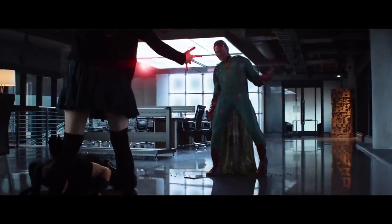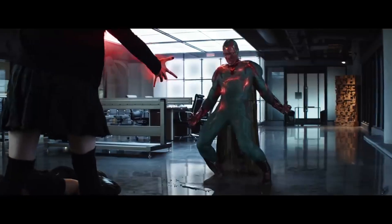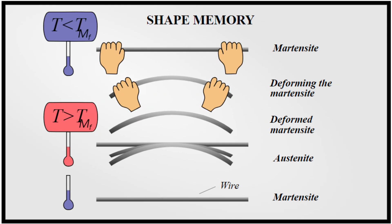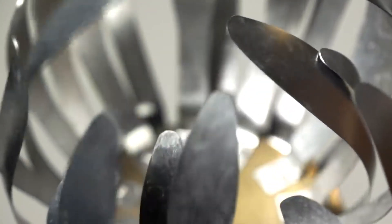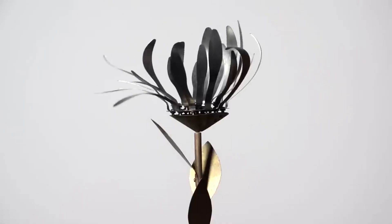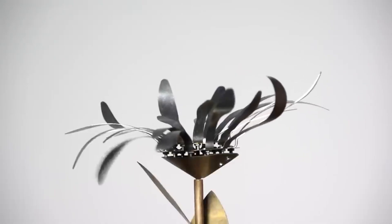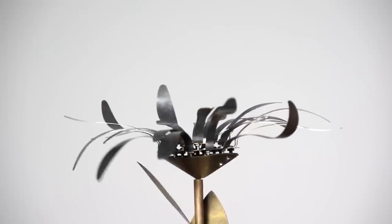Looking at the closest human comparisons, humans cannot naturally manipulate their density, but we have developed materials and technologies that can change their properties under certain conditions. Shape memory alloys are materials that can return to their original shape after deformation when exposed to the appropriate temperature. These materials are used in various applications including medical devices, actuators, and robotics.